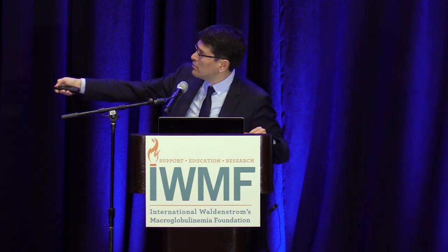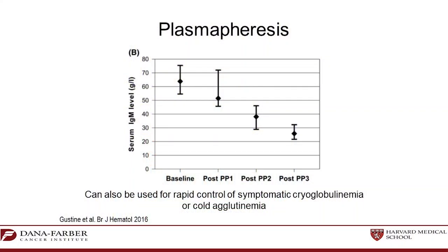In the acute setting we like to give at least two, if not three, plasmapheresis sessions over three to four days, bringing the IgM from a median of about 6,500 down to a median of about 2,500. It's not perfect and doesn't remove all the IgM, but if we do nothing else after this point the IgM will come back up, because we are not doing anything to the malignant cells — the IgM will return to its prior level within about four weeks.